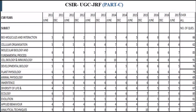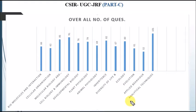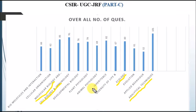Similarly, I analyzed the previous year papers for Part C of CSIR JRF. You can see the number of questions asked year-wise and the total questions from each chapter. The important chapters here are analytical techniques, cell biology and immunology, molecular biology and fundamental processes, ecology, and inheritance, which is also important for Part C.